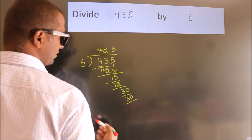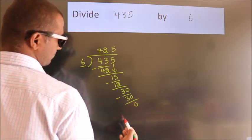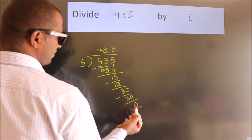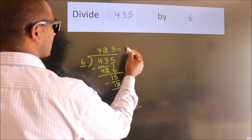Now we subtract. We get 0. Here we got remainder 0. So this is our quotient.